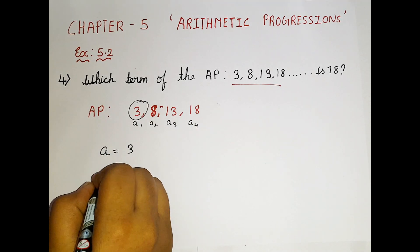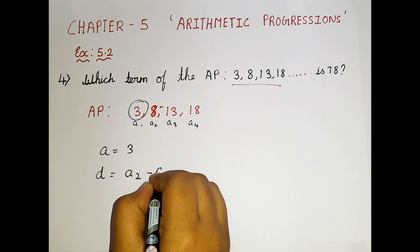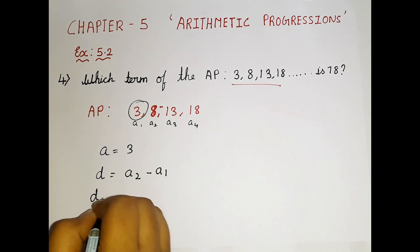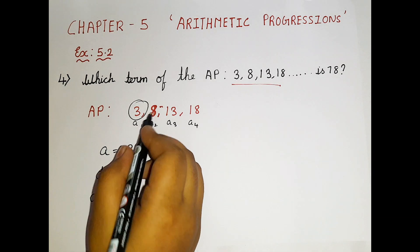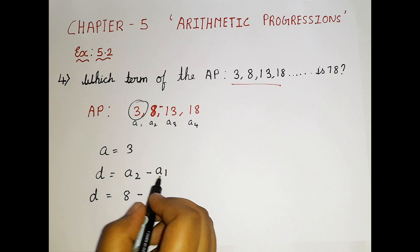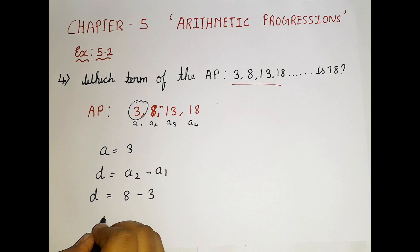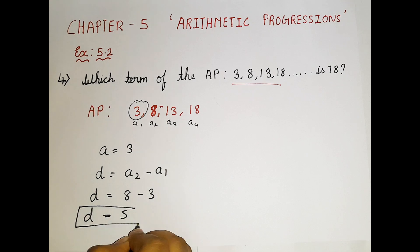a is equal to 3 and d, how to find d? a2 minus a1. Here what is a2? I just told you guys a2 is 8, minus a1, a1 is 3. When we subtract them, we get 5. So d is equal to 5.